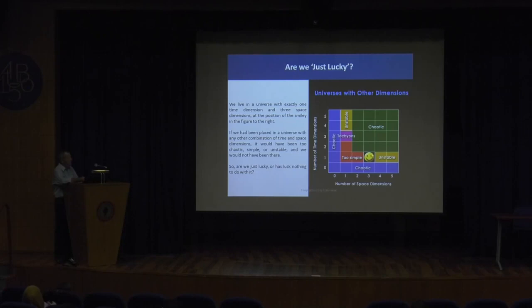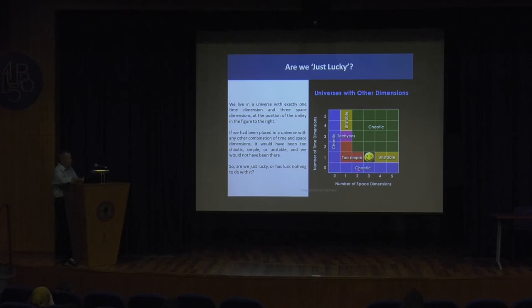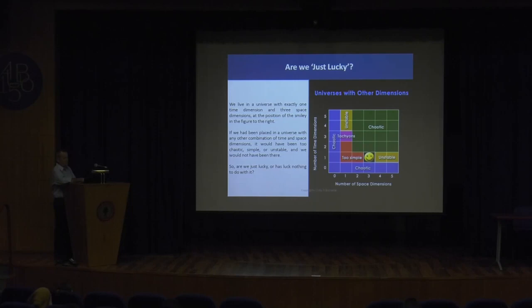So there are two fundamental answers to the question of why we live in such a friendly universe: you can say God — a designer — or you can say it must be so because otherwise we could not ask the question. Another variation: we live in a universe with exactly three space dimensions and one time dimension. It cannot be different — two time dimensions would let us walk back and forth in time causing chaos; only two space dimensions would also be chaotic. So we live in this 'smiley' arrangement, and if it had been different there would be no smiley and no us. That is how I see this long-standing debate between the design argument and the anthropic argument.